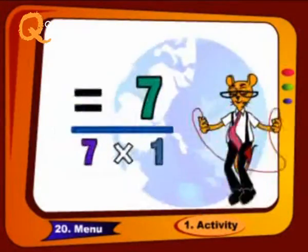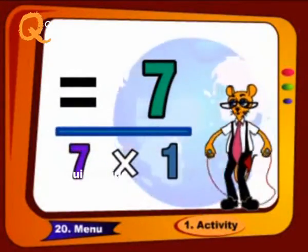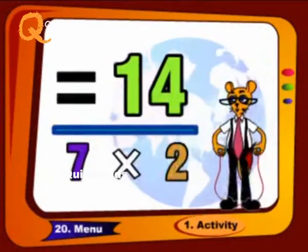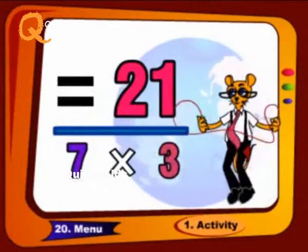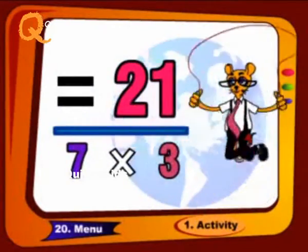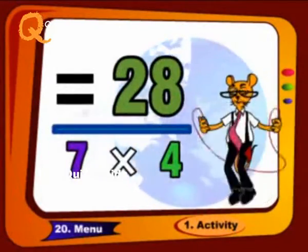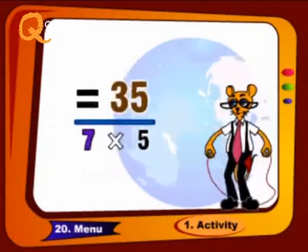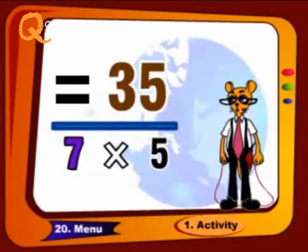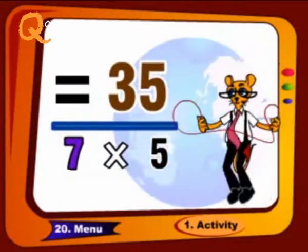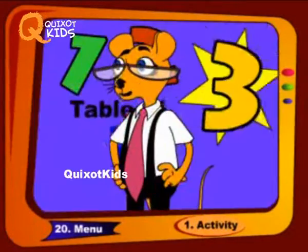7 1's are 7, 7 2's are 14, 7 3's are 21, 7 4's are 28, 7 5's are 35. Come with me.